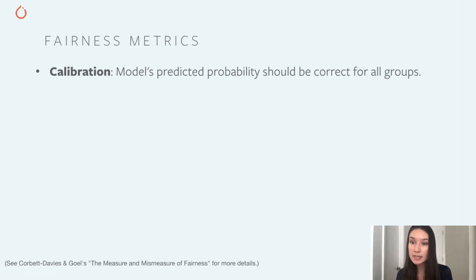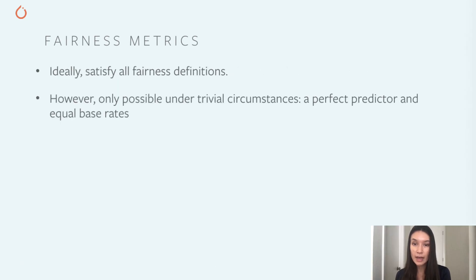Finally, there's calibration. Calibration means that regardless of the group that a sample is in, the model's predicted probability for the sample represents the true probability of occurrence. In the context of the COMPASS risk assessment, calibration means that among the defendants with a given risk score, the proportion that would re-offend if released is the same for both groups. While calibration is generally desirable, it has been shown to provide only a weak guarantee of equity. In particular, it is often straightforward to satisfy calibration while strategically misclassifying individuals in order to discriminate. Of course, it would be great if we could simultaneously satisfy all fairness definitions. However, this is only possible under certain highly unlikely circumstances, like when there's a perfect predictor or equivalent base rates across subgroups. Therefore, it's important for developers and organizations to understand the different ways to measure fairness and the inherent trade-offs they have.